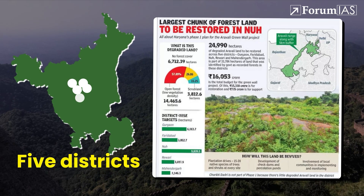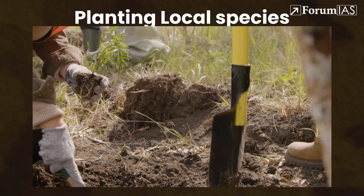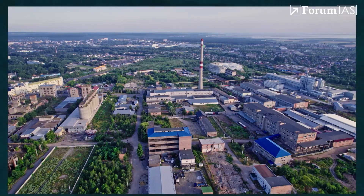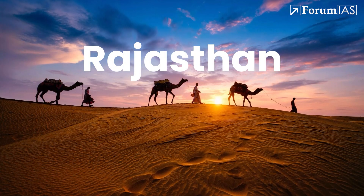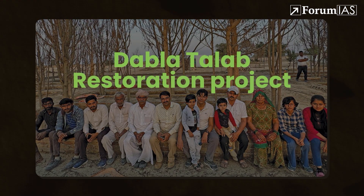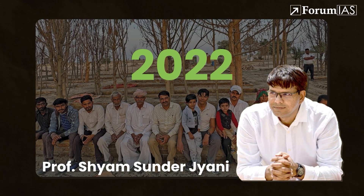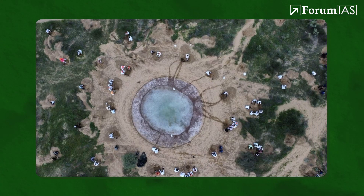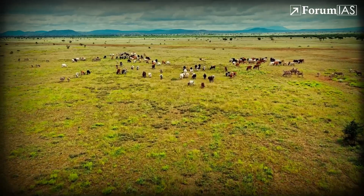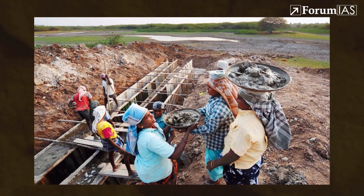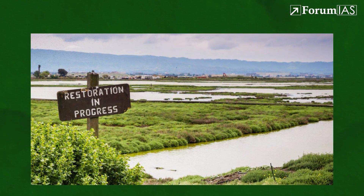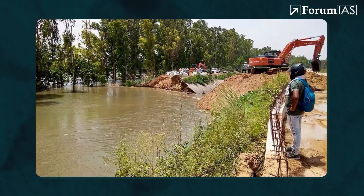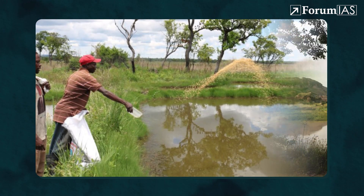In a project similar to Africa's Great Green Wall, Haryana is restoring nearly 25,000 hectares of degraded Aravalli land across five districts through soil and water conservation, planting local species, and involving communities — halting desert spread and boosting urban ecology. In Rajasthan, the Dabla Talab restoration project, led by Professor Sham Sundar Dhyani in 2022, transformed 207 acres of barren land into a thriving ecosystem through a community-driven approach. In Tamil Nadu, the revival of the Kudimara Matu scheme — a traditional community-led water restoration system — has brought lakes, ponds, and canals back into working condition, strengthening both water security and biodiversity.